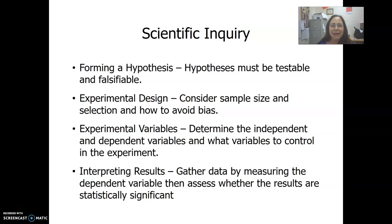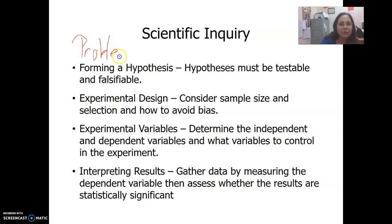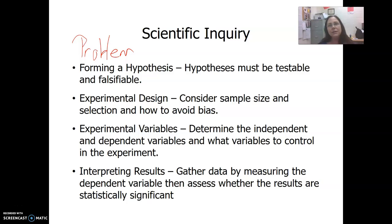An introductory science course has to include information on the scientific method, also called scientific inquiry. The steps begin with identifying a problem or question. The hypothesis — I've heard it described as an educated guess, but really you're going to research the topic first, so when you form the hypothesis it's not as much of a guess. You can do your experiment and find that the evidence doesn't support your hypothesis, but usually you know enough that you're heading in the right direction. A hypothesis is a suggested explanation to your problem.